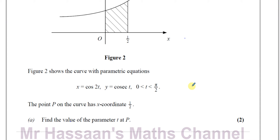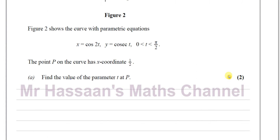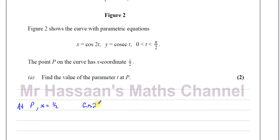Part (a): the point P on the curve has x-coordinate 1/2. We need to find the value of the parameter t at P. At P, x = 1/2, so we replace x with 1/2 in the equation: cos(2t) = 1/2.